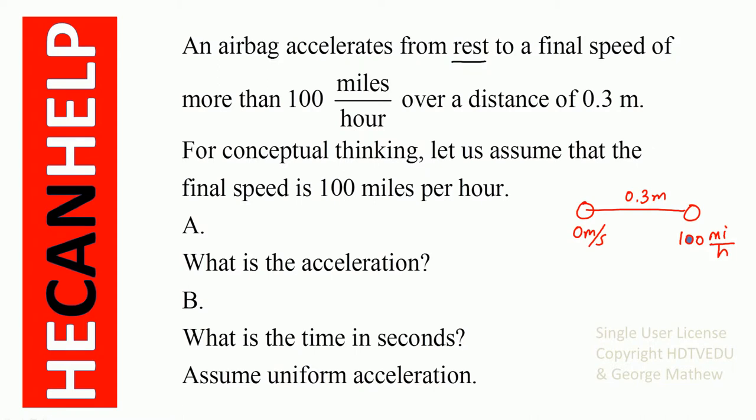An airbag accelerates from rest to a final speed of more than 100 miles per hour over a distance of 0.3 meters. For conceptual thinking, let us assume the final speed is 100 miles per hour. Part A: what is the acceleration? Part B: what is the time in seconds? Assume uniform acceleration — going from 0 to 100 miles per hour over a distance of 0.3 meters.